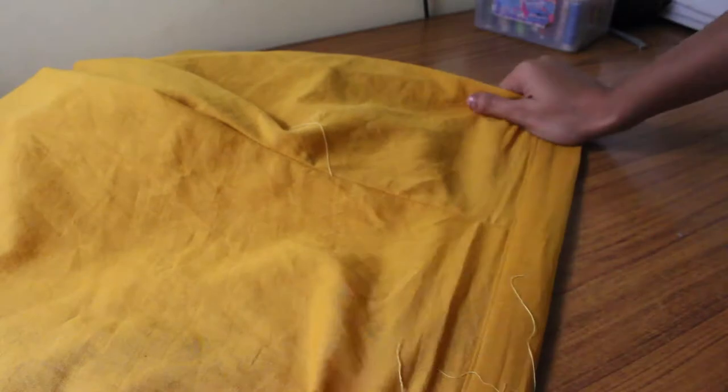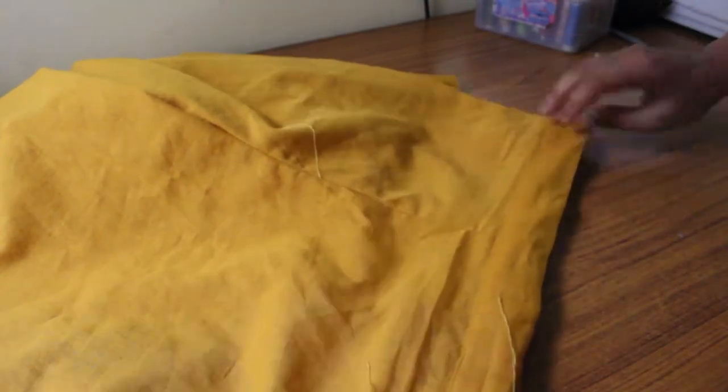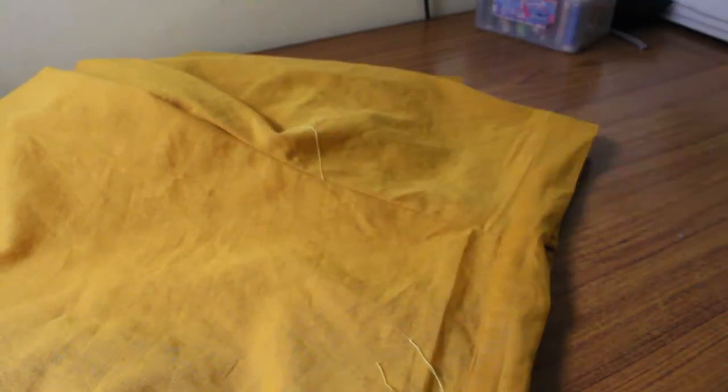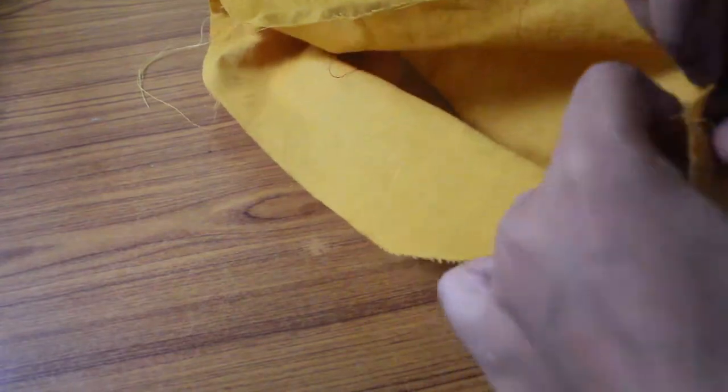This completed our waist belt. Next is to finish the bottom hem that I double folded and stitched.